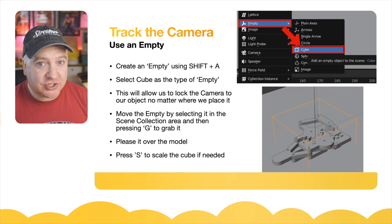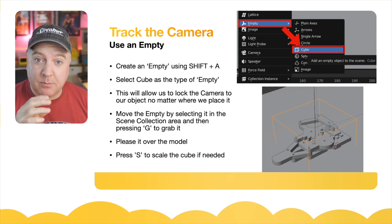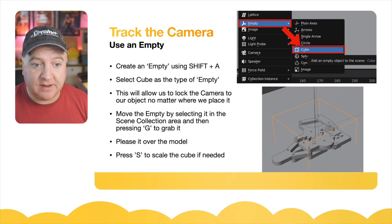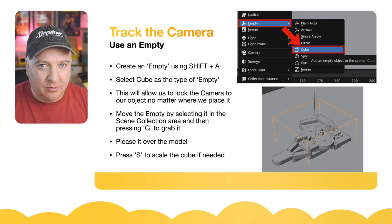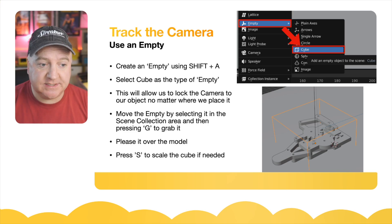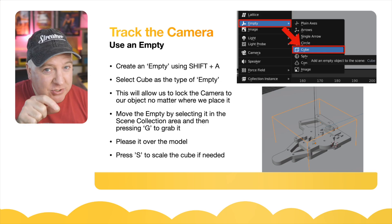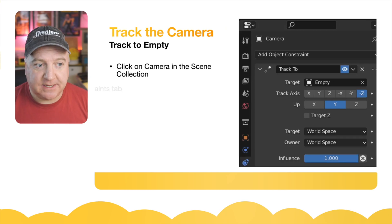One thing we can do in Blender is create a constraint to lock the camera to a point on the object so it always points at it as we rotate around. To do this we create something called an empty. Press Shift+A to bring up the add menu, then select the type of empty — we're going to use a cube because it makes it easier to visualize what's encapsulated within it. It won't get rendered out but it's there for us to point other objects to. Move the empty by selecting it in scene collections, then press G to grab it. Press S to scale it so it's visible outside the model.